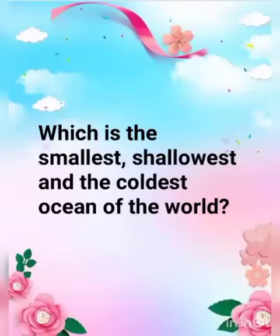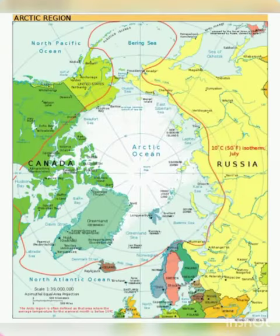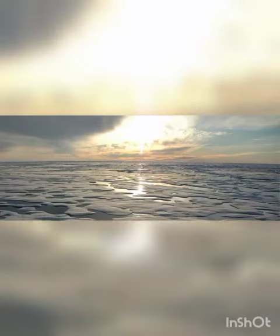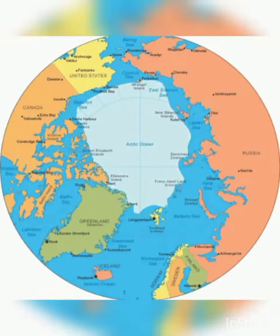Which is the smallest, shallowest and the coldest ocean of the world? The Arctic Ocean is the smallest, shallowest and the coldest of the world's five ocean basins.